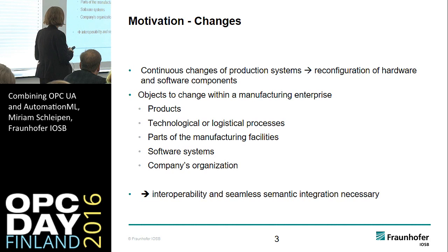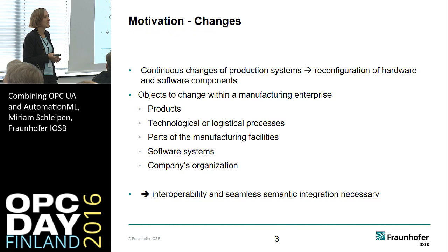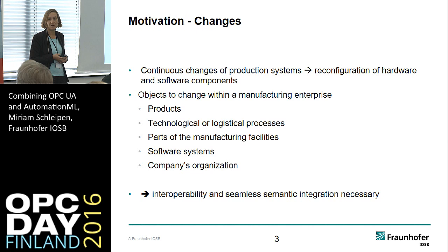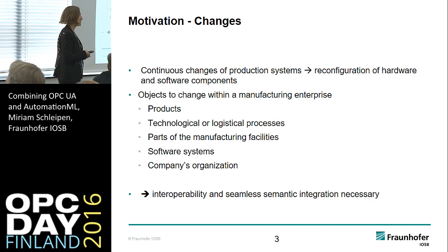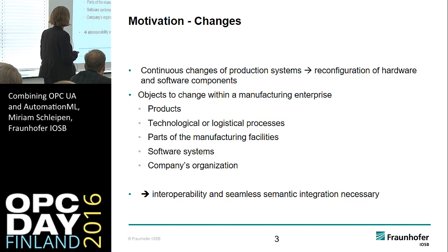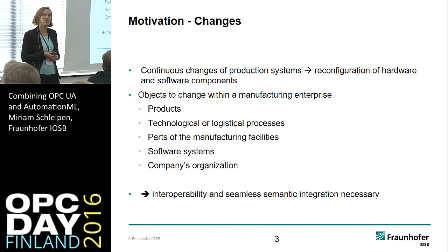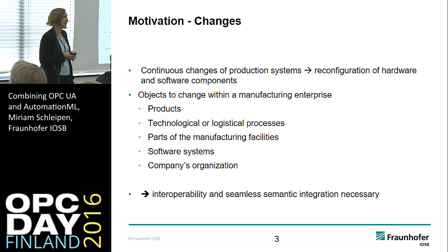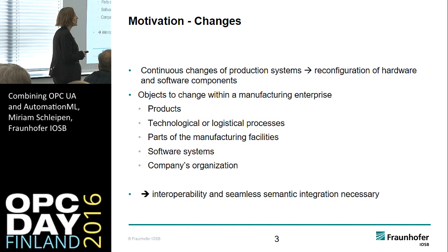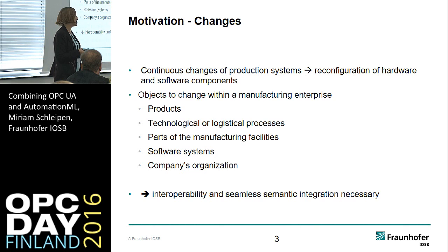The motivation is that we have continuous changes in production systems and you have to do a lot of re-engineering. Re-engineering involves all tools used for planning production plants but also for the components. You have a lot of tools, a lot of people involved, a lot of tools involved, and this works. You can't say the future will be that you only have one tool — you need all those people, all the disciplines, their know-how, and the tools. But you have a lot of objects which can change.